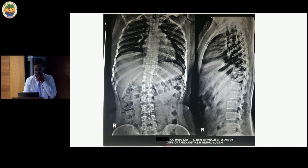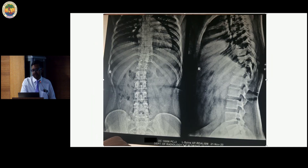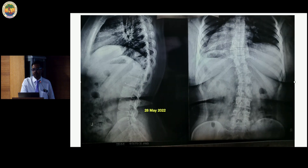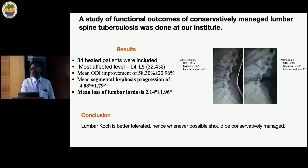This patient with D10-D11 caries — the X-ray taken in August 2020 shows the lesion; he didn't seek treatment. By November 2020, and then February 2021, the lesion started collapsing, and by May 2021 it healed uneventfully. There is hardly any minor curve that needed instrumentation. If you do proper bracing and medical management and take care of nutrition, the results are going to be very good.